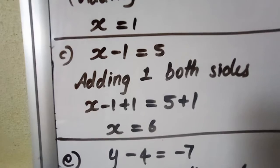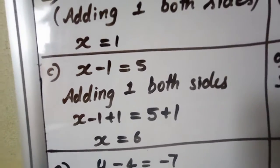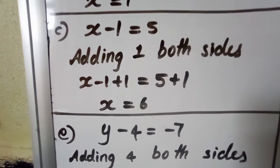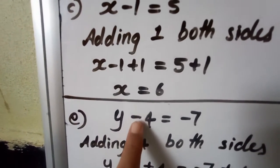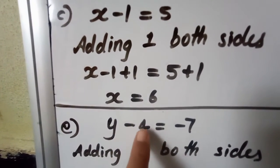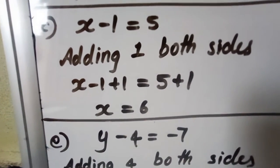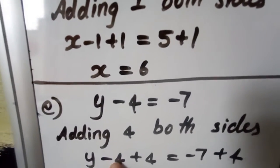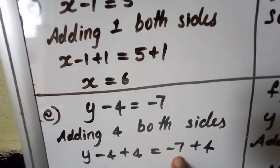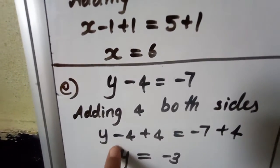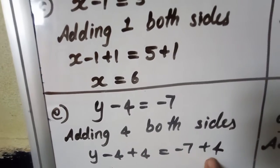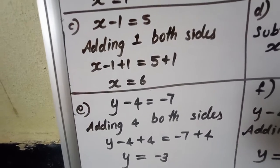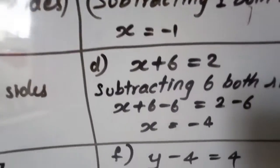Question E: y minus 4 is equal to minus 7. Adding 4 to both sides: y minus 4 plus 4 equals minus 7 plus 4. The minus 4 and plus 4 cancel, leaving only y. Minus 7 plus 4 gives minus 3. So y is equal to minus 3.